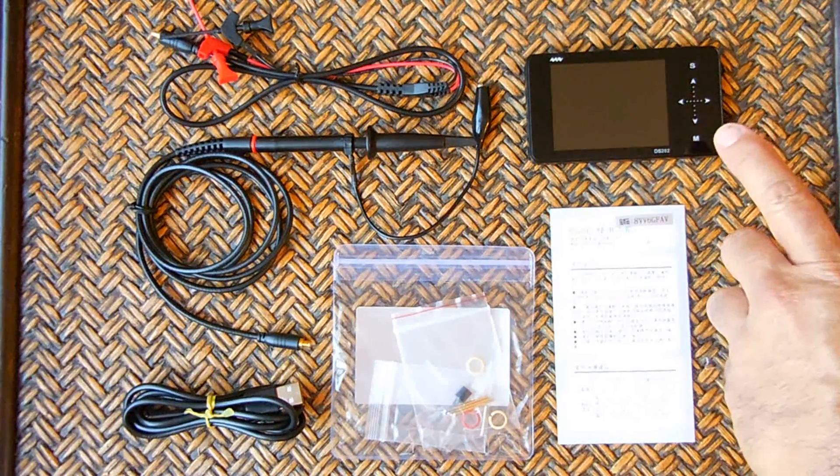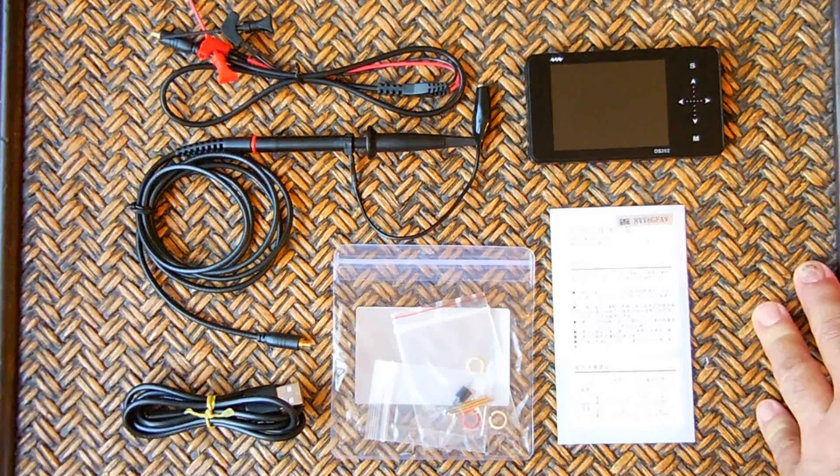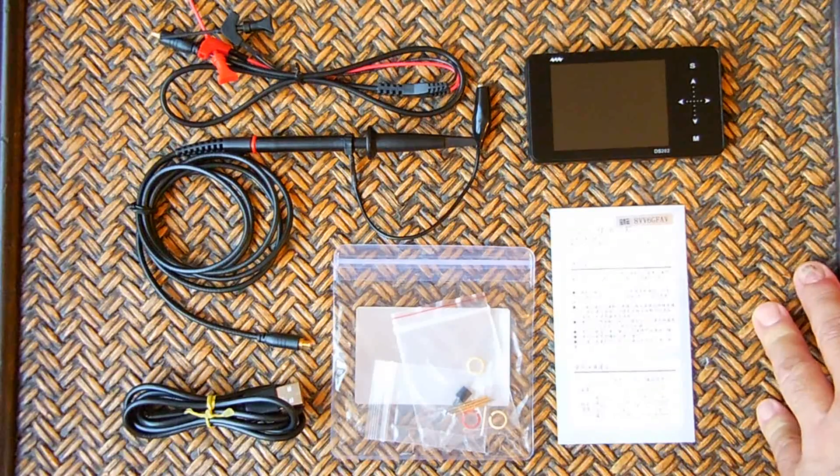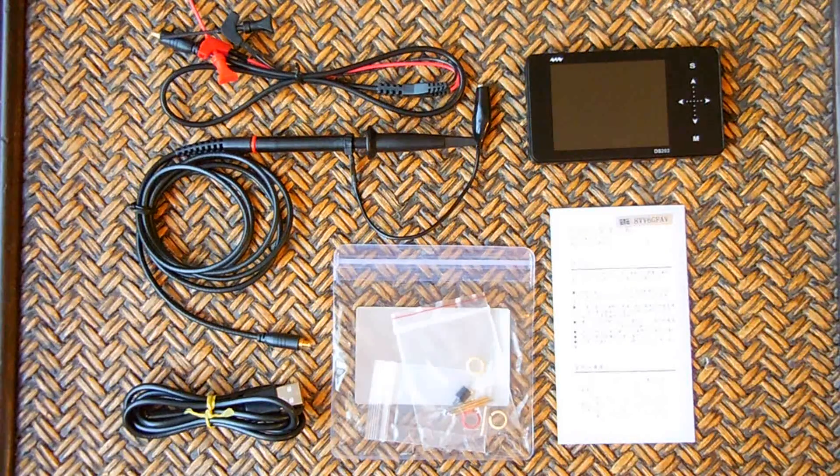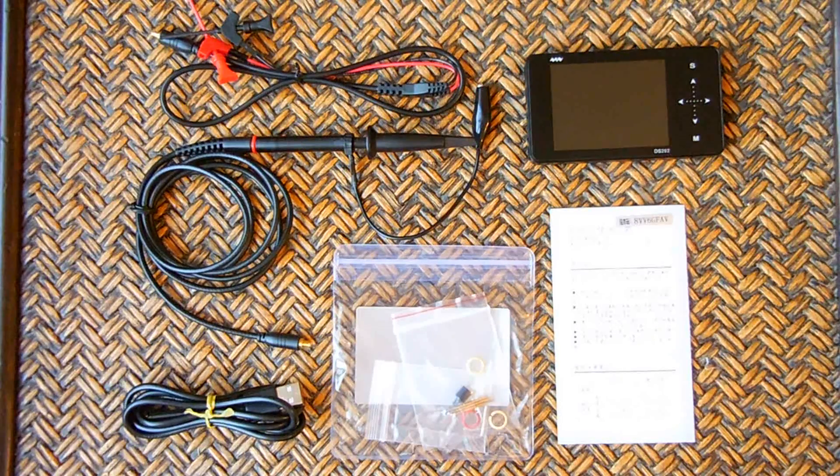Now the signal generator that's built into this unit, which I'll demonstrate shortly, will produce a 10 hertz to one megahertz square wave, duty adjustable, or a 10 hertz to 20 kilohertz sine wave, square wave, triangle, or sawtooth wave.